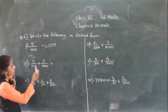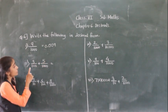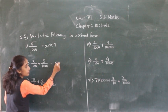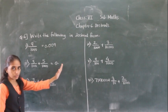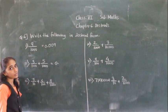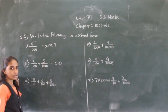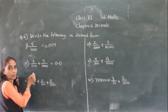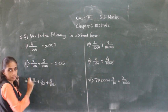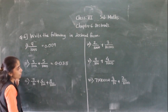Next example: 3 upon 100 plus 5 upon 1000. No whole number is given, so write 0. After the whole number we give the decimal point. Any number upon 10 is not given, so at the tenths place write 0. 3 upon 100 means 3 will come at the hundredths place, and 5 upon 1000 means 5 will come at the thousandths place. So the answer is 0.035.